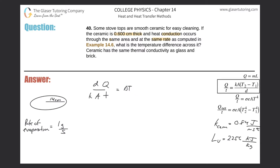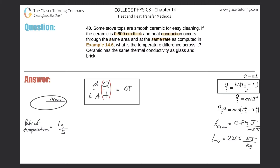Now I need to know these pieces. Keep Q/t in mind as almost one unit, but we'll keep it separate for now. Do we know the thickness? Yes — they told us 0.6 centimeters, which we convert to meters. Do we know k? Yes — after looking it up, it's 0.84. Do we know the area? They gave us the radius, so we calculate A = πr², converting to meters.